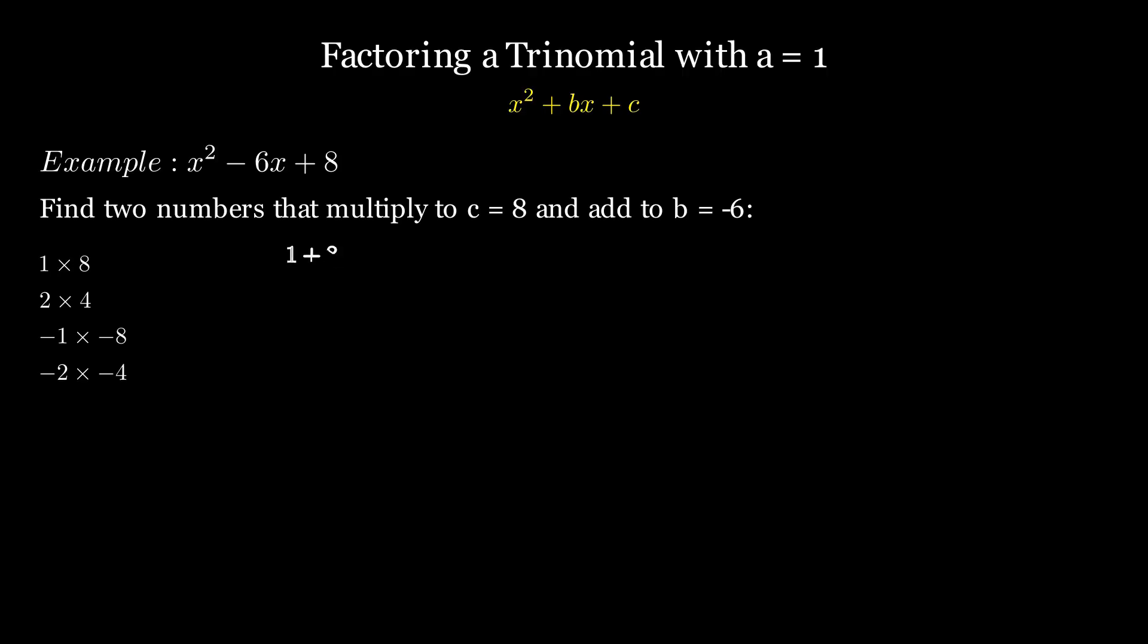Now, let's check their sums: 1 plus 8 equals 9, 2 plus 4 equals 6, minus 1 plus minus 8 equals negative 9, and negative 2 plus negative 4 equals negative 6. The pair that works is negative 2 and negative 4, so the trinomial factors into x minus 2 times x minus 4.